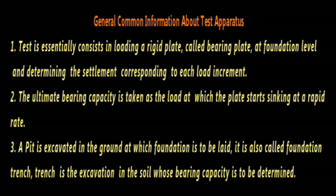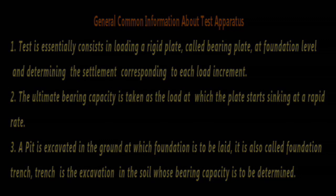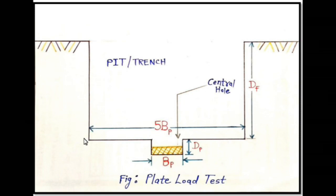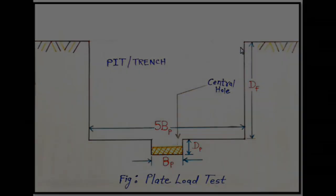A pit is excavated in the ground at which the foundation is to be laid, also called a foundation trench or foundation pit. The trench is excavated in the soil whose bearing capacity is to be determined. If BP is the width of the steel plate, the width of the foundation trench should be 5 times the width of the steel plate. For example, if the width of the steel plate is 30 cm, the width of the foundation trench should be 150 cm. The depth of excavation of the foundation trench should be equal to the depth of the proposed foundation.